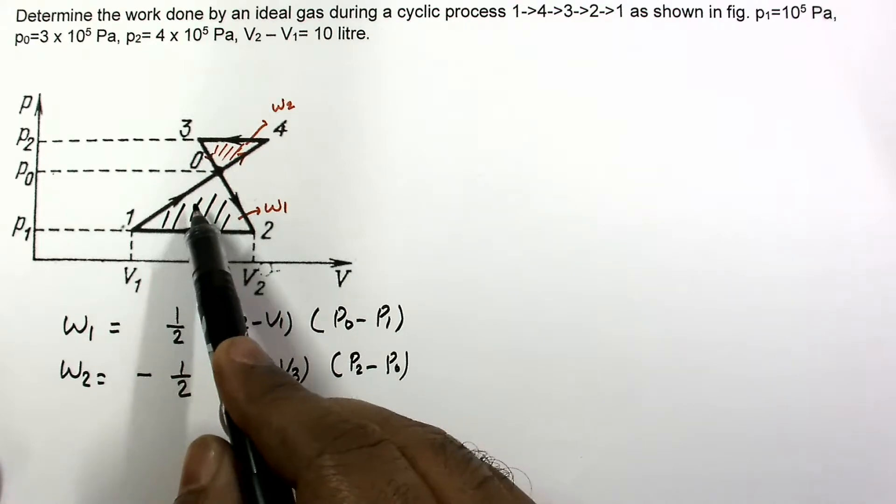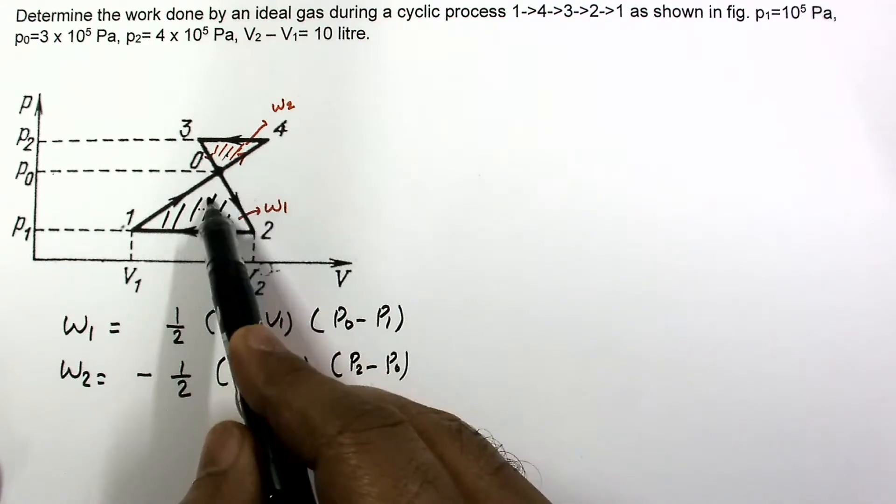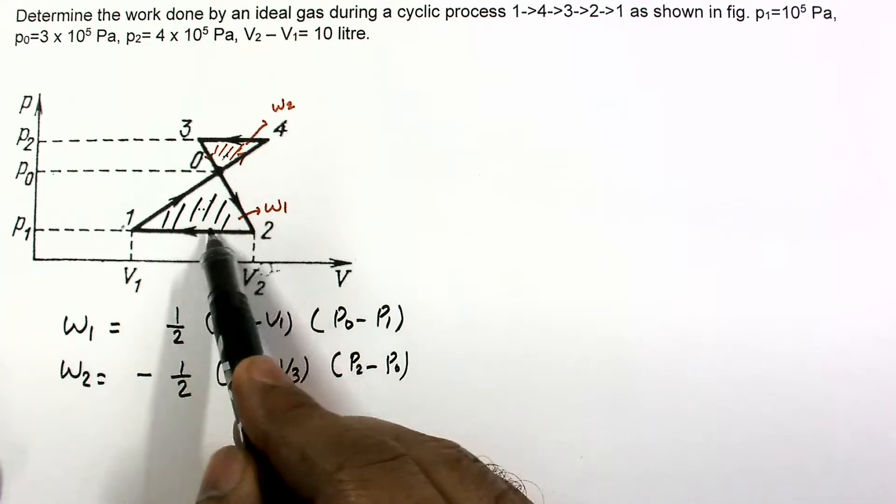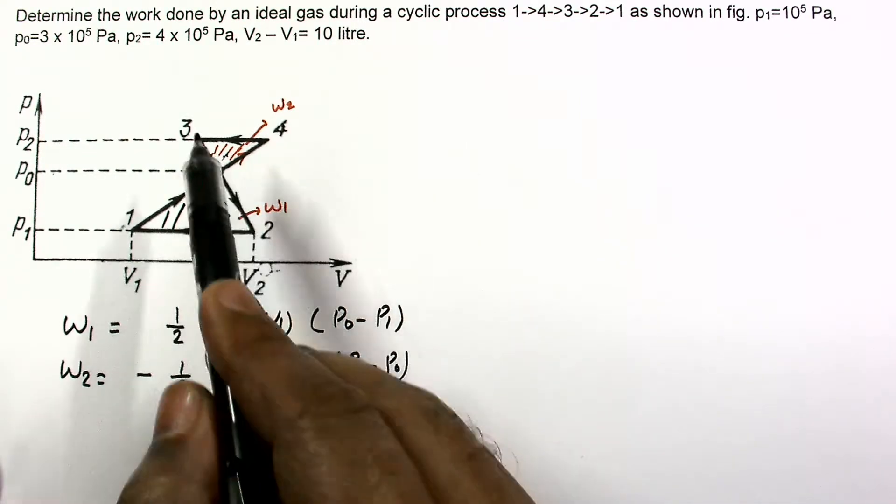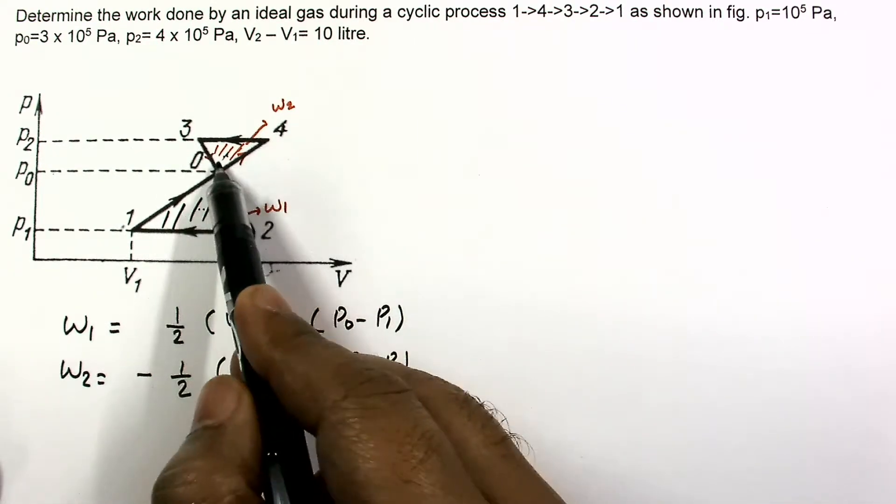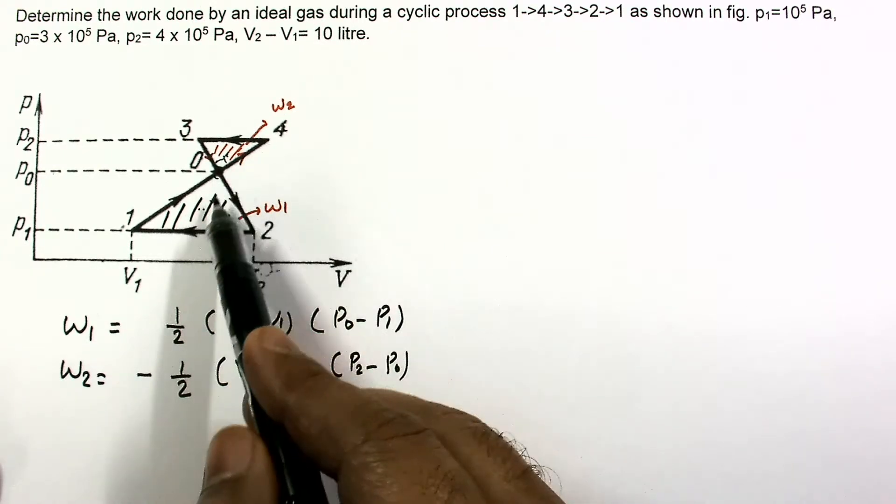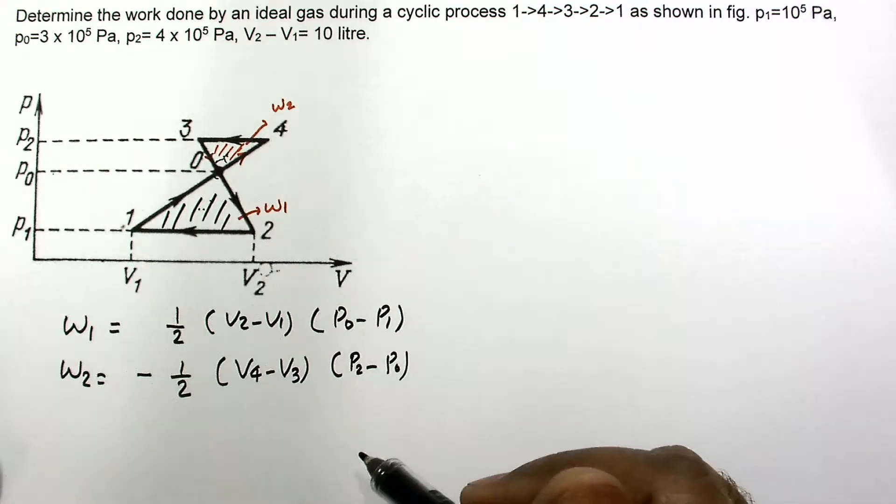These two triangles are similar triangles. Since this is parallel to the V axis, this is parallel to V axis, this angle is equal, so these two triangles are similar triangles.